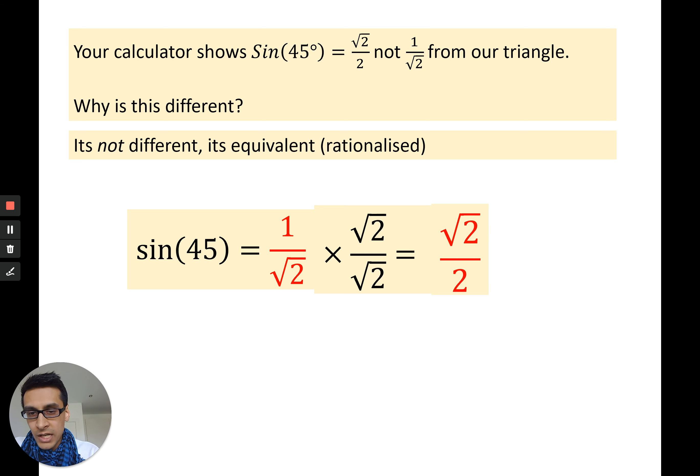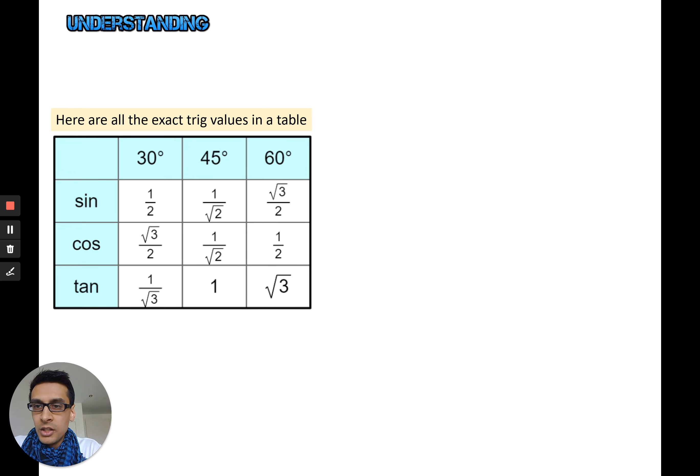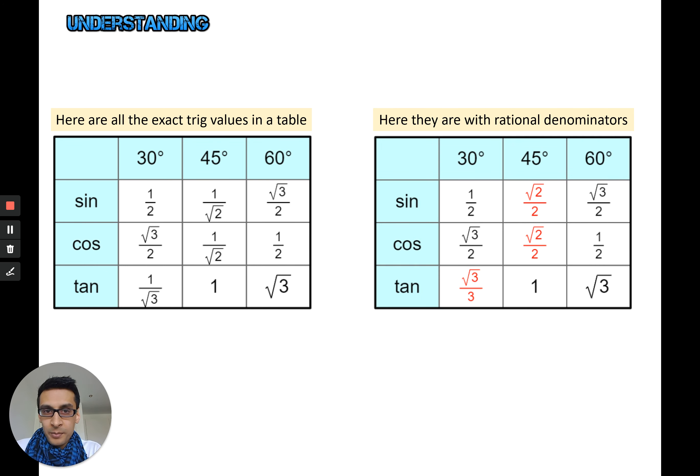So the two red fractions you see are equivalent to each other. They're equally valid. I'm going to show you which one's more preferential to use. Here I've made a table of the exact trig values that we've worked out. It's a bit neater than doing a list. I've also rationalized all of them where you can rationalize them onto this table on the right. You can see the red ones that have been rationalized. Both tables are technically the same. They're all equivalent to each other.